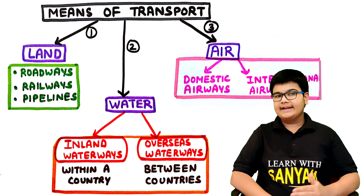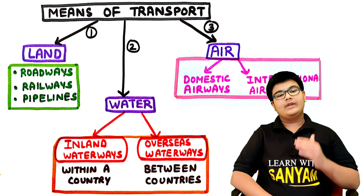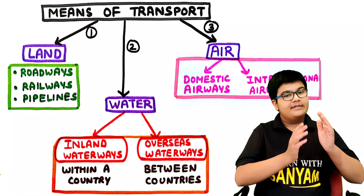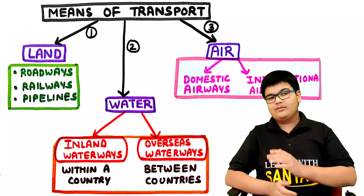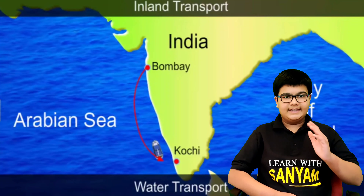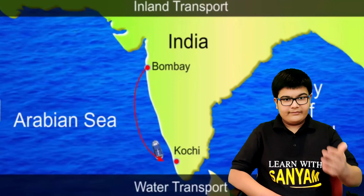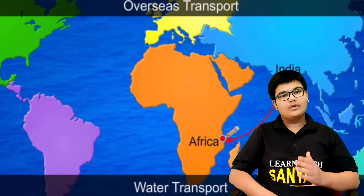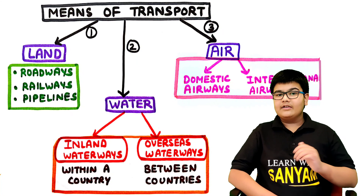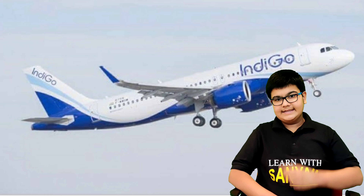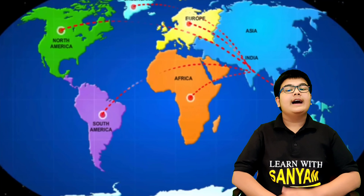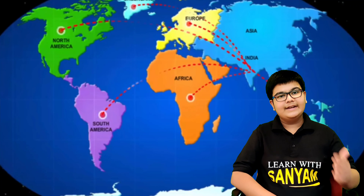Inland transport is further divided into roadways, railways and pipelines. Water transport is further divided into inland waterways and overseas waterways. Inland waterways are those within a country between two different ports within a country, while overseas waterways are between two or more countries. And air transport has two types of airways: domestic airways and international airways. Domestic airways are within a country and international airways are between two countries.